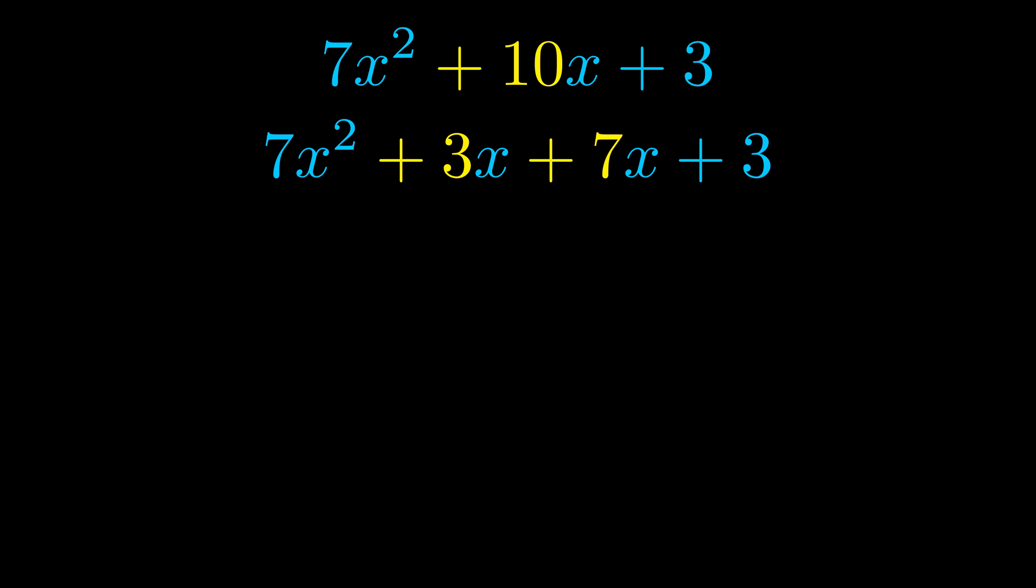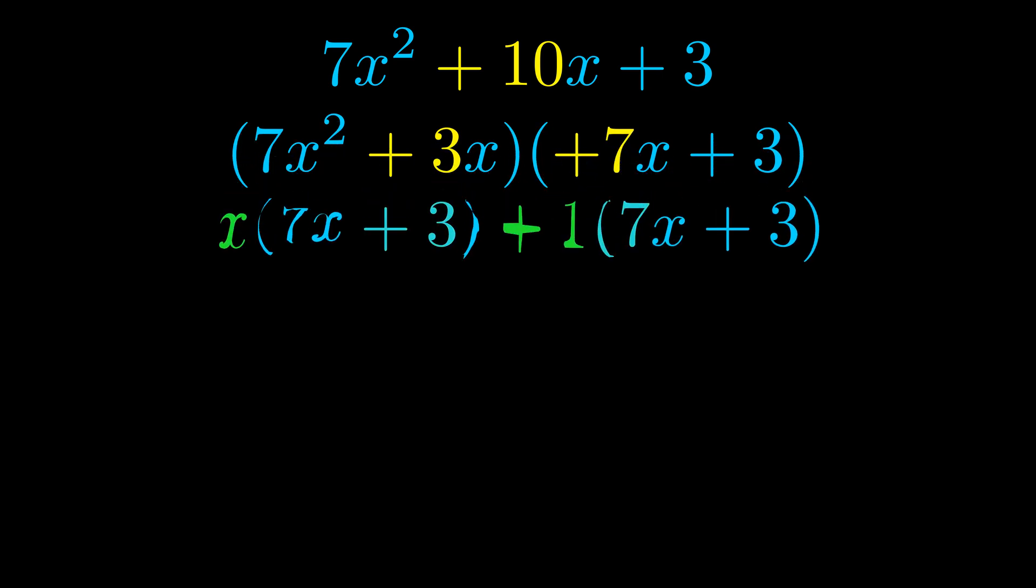Once we've done this we go ahead and we put parentheses around the first term and the last term. And we do that so that we can take the greatest common factor out of both terms. We can see the greatest common factor is now outside in green.